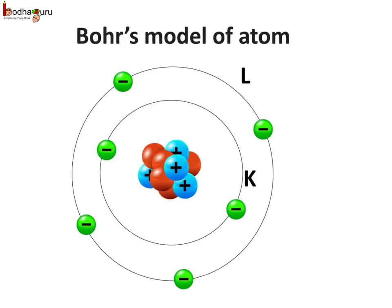So, what is the accepted model of an atom as proposed by Niels Bohr? Well, only certain special orbits known as discrete orbits of electrons are allowed inside the atom. While revolving in discrete orbits, the electrons do not radiate energy. These orbits or shells are called energy levels. The orbits or shells are represented by the letters K, L, M, N or the numbers N equal to 1, 2, 3, 4 and so on. We will go deeper into the amazing atomic world in the next lesson. Until then, bye-bye.